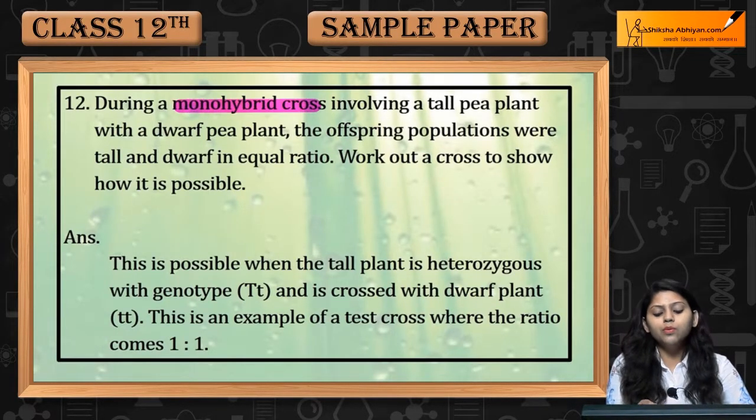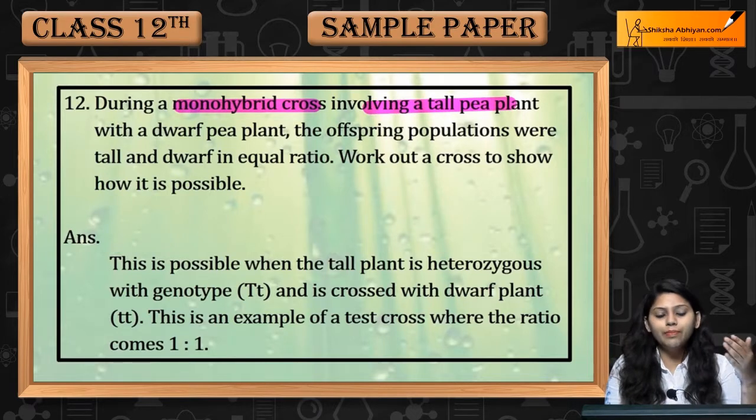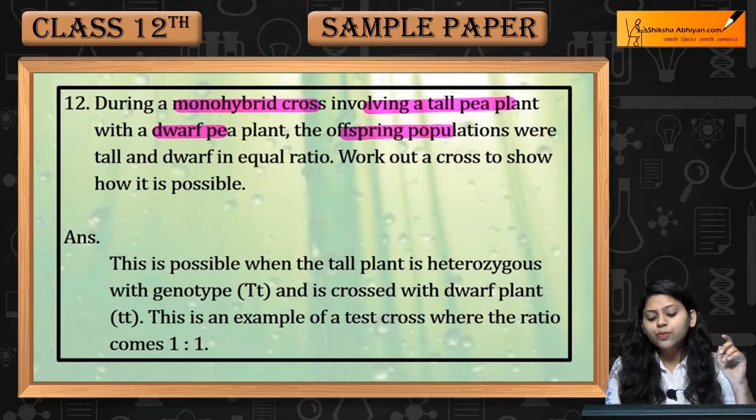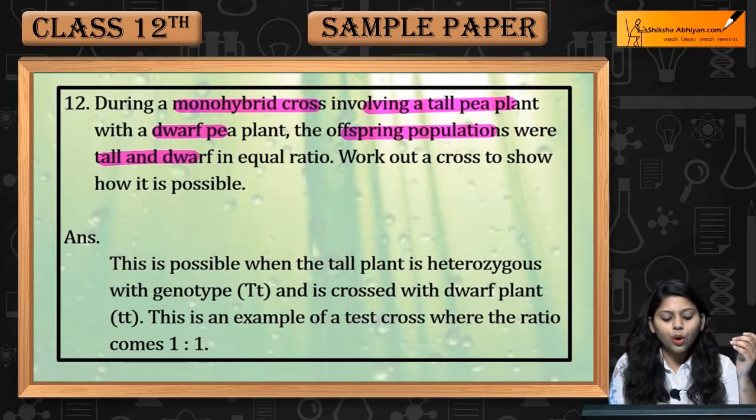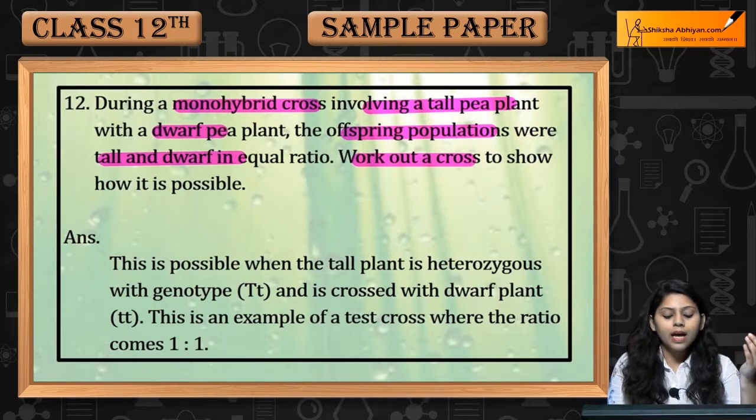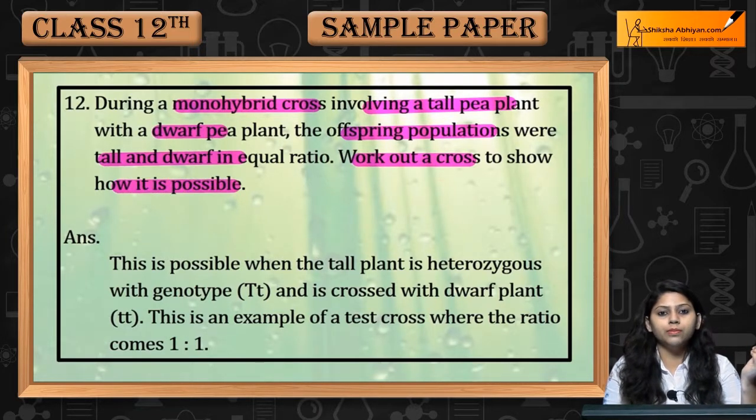During a monohybrid cross involving a tall pea plant with a dwarf pea plant, the offspring populations were tall and dwarf in equal ratio. Work out a cross to show how it is possible.